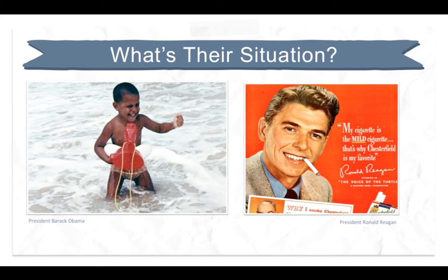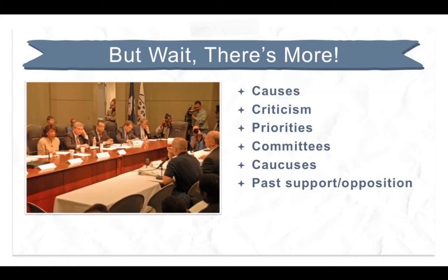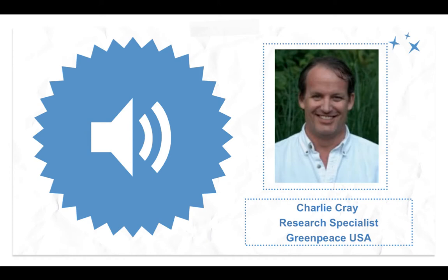Do they have a spouse or children? What previous jobs have they had? Who are they related to and friends with? What's the best way to get an in-person meeting with them? Can you get a constituent or mutual acquaintance to make the meeting request? What causes do or have they supported? What criticism do they receive and from whom? What's on the top of their legislative agenda? What congressional committees have they served on? What caucuses are they members of? And has your organization approached them for support before — how did that go? Research is a big, important job for any campaign, so check out Charlie's research video because he is a research ninja.